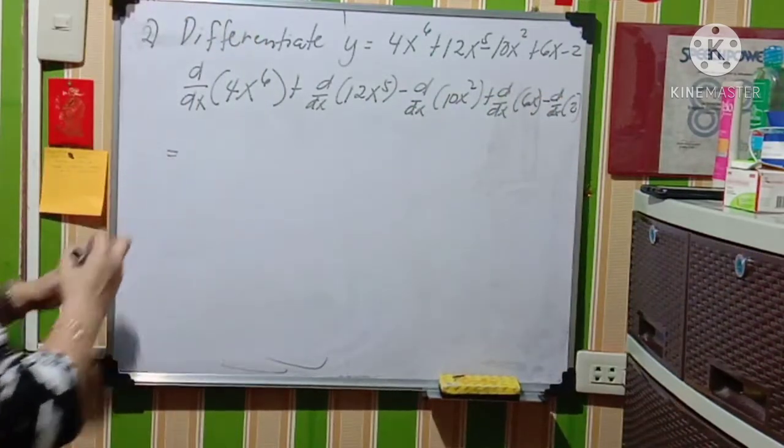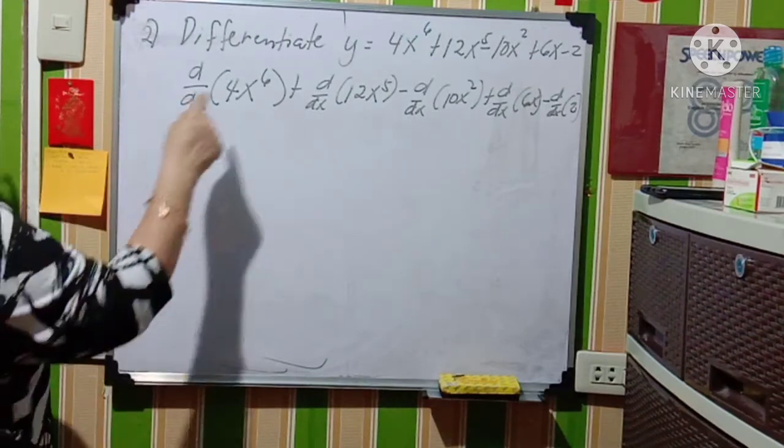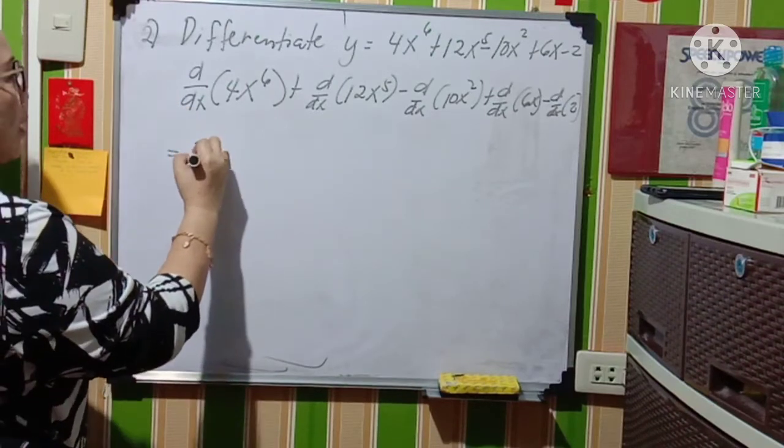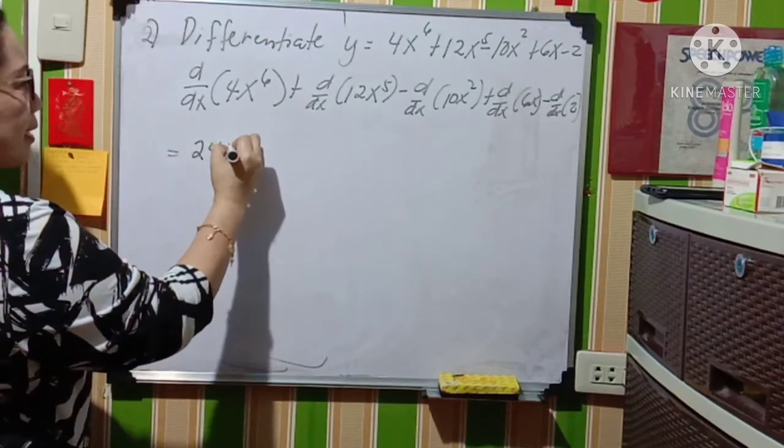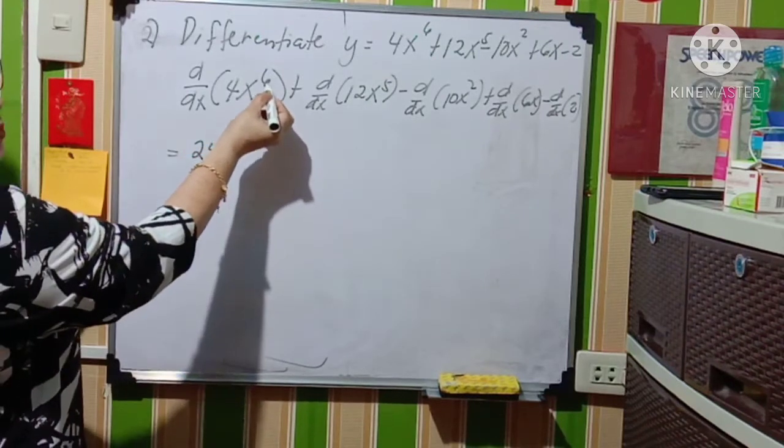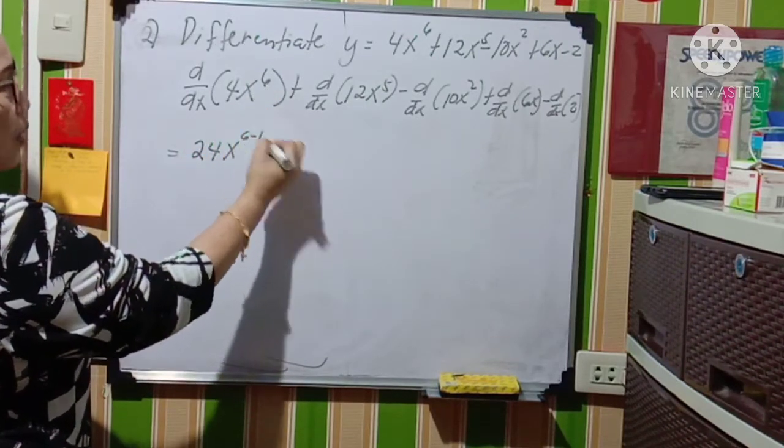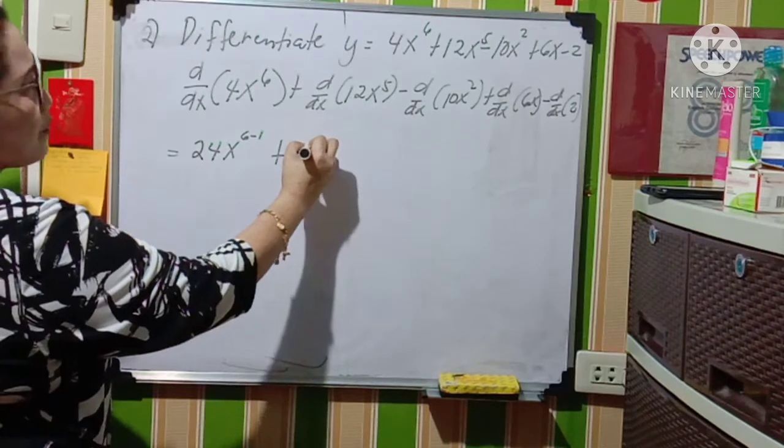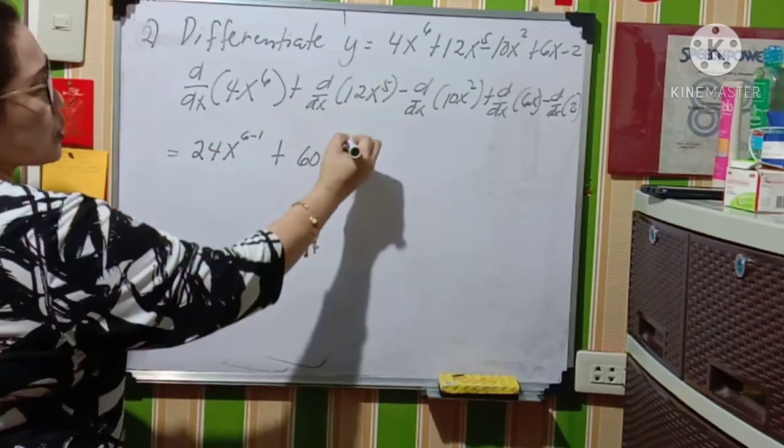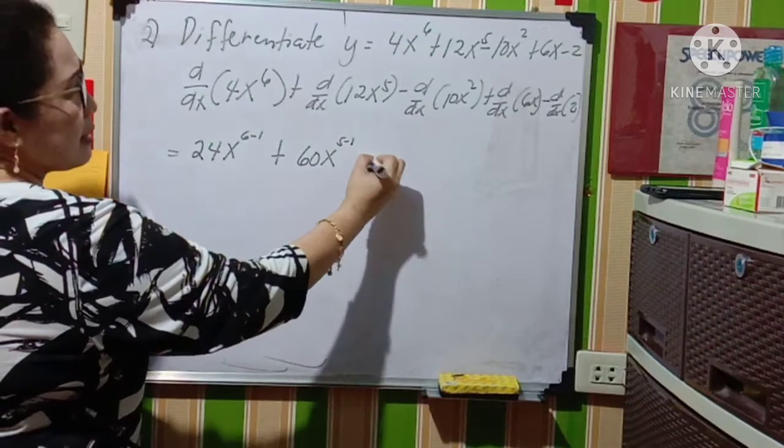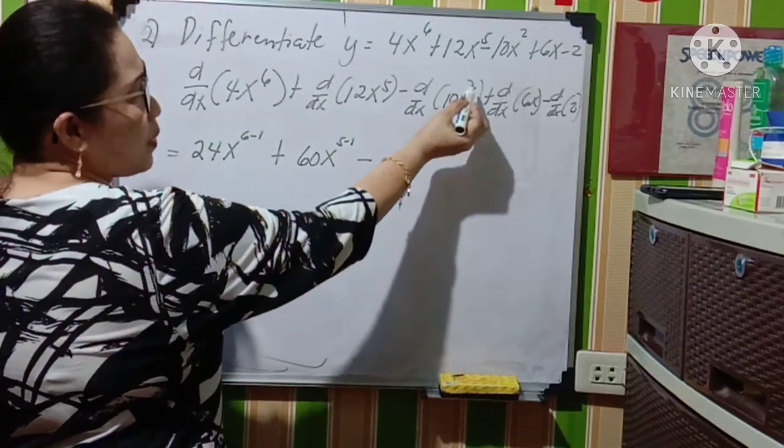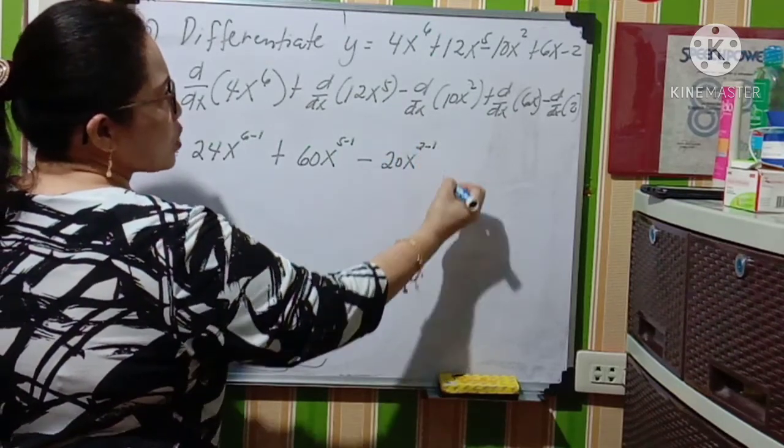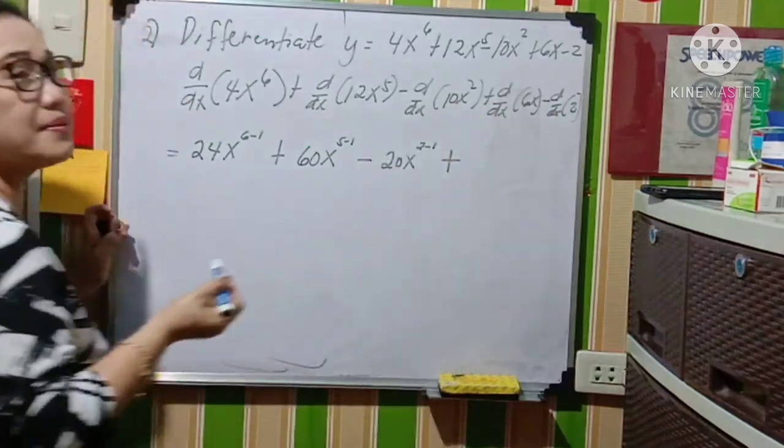Okay, so let us get the derivative of this. So let us proceed to the solution. Multiply the exponent by 4. So 6 times 4 will give you 24x. All exponents will be subtracted by 1. 6 minus 1 plus the derivative of this: 5 times 12 will give you 60x raised to 5 minus 1 minus the derivative of 10x squared. So 2 times 10 will give you 20x raised to 2 minus 1.